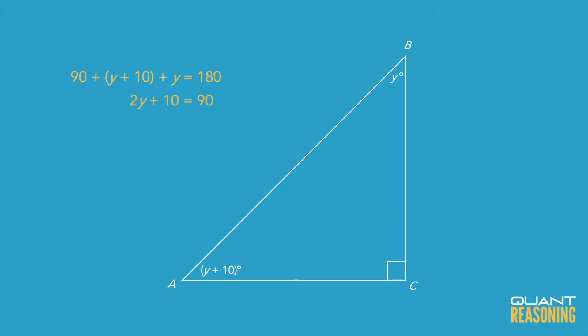If you don't feel like drawing a number line, you can just solve it algebraically. We find that y is 40, which means the other angle is 50, and their ratio is 4 to 5.